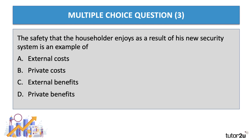Question three: the safety that the householder enjoys as a result of his new security system is an example of what? The answer is D — the private benefit. The utility, satisfaction, and benefit we get from consuming or producing a good or service is called the private benefit.